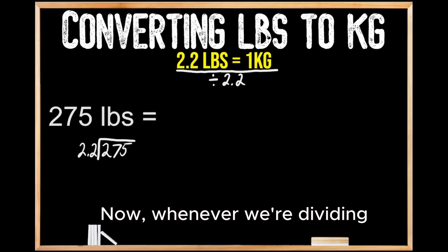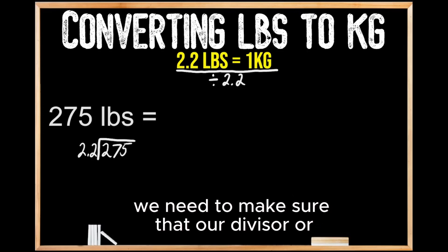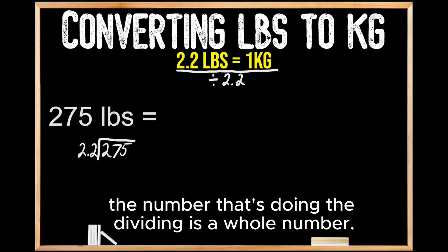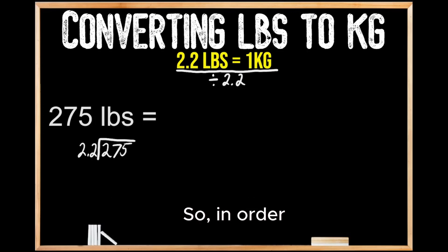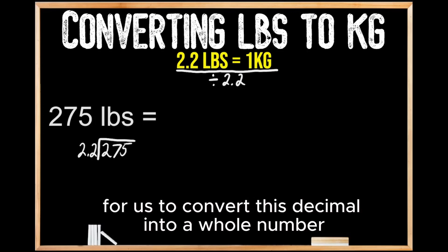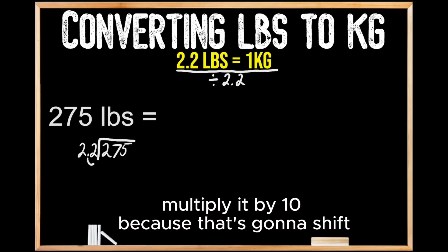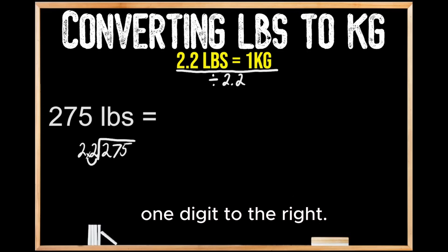Now, whenever we're dividing a whole number by a decimal, we need to make sure that our divisor, or the number that's doing the dividing, is a whole number. So in order to convert this decimal into a whole number, we're going to multiply it by 10, because that's going to shift the decimal place one digit to the right.